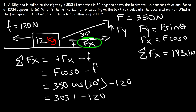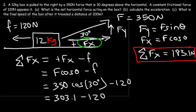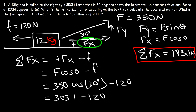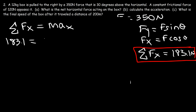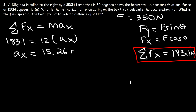So that's the answer to part A. Now for part B, to find the acceleration we use the net force equals m times a. The net force is 183.1 newtons and the mass of the box is 12 kilograms, so the acceleration is 183.1 divided by 12, which equals 15.26 meters per second squared.